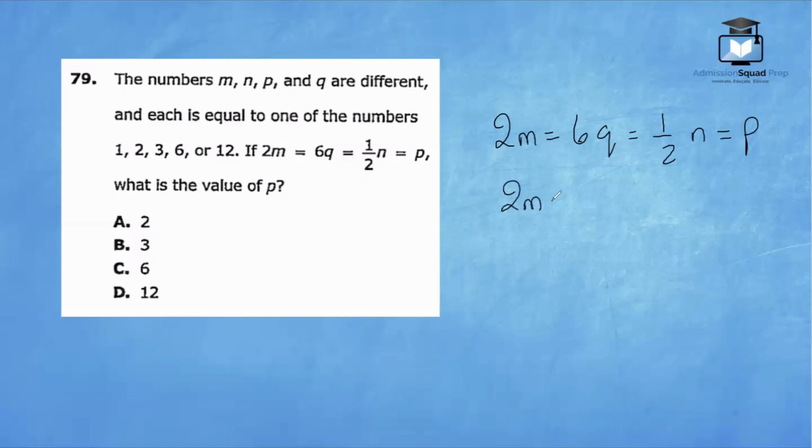If 2M equals P, I know that P is divisible by 2. I also know that P is divisible by 6. I can also tell that if one half of N equals P, then N is going to be the biggest number. So let's try out N being equal to 12. If N is 12, then one half of 12 equals 6, and then 6 times 1 also equals 6. So that means Q has to be 1, and then 2 times 3 is also equal to 6. So we have our values.